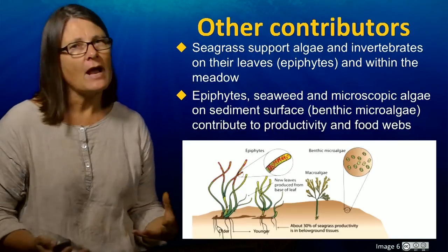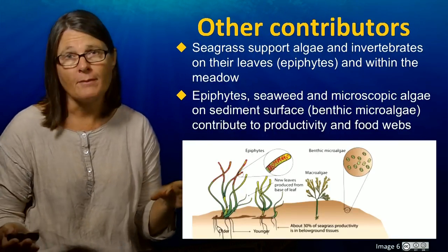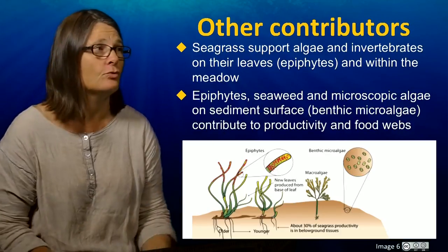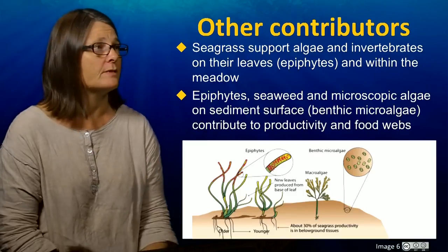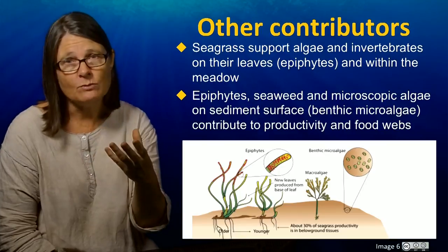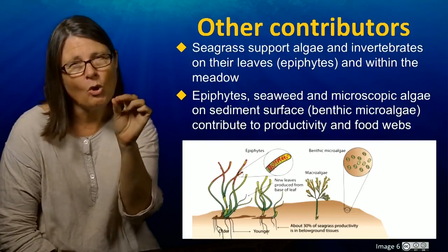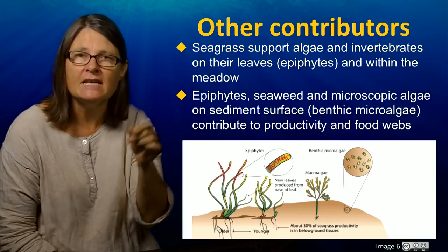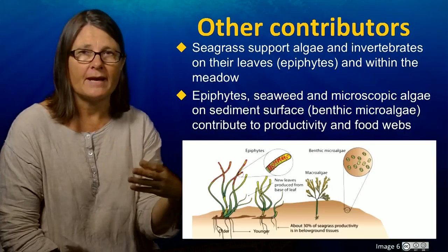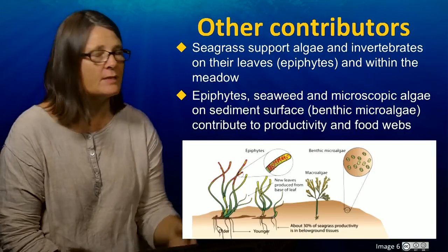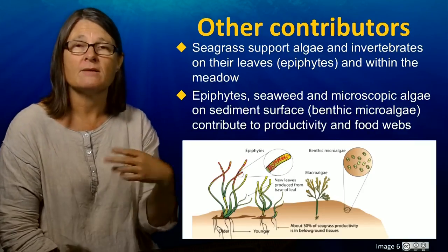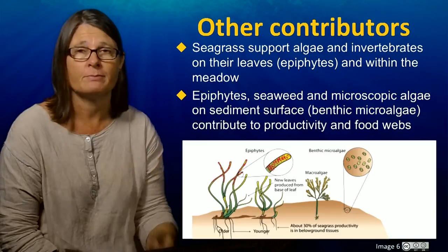Seagrasses are not the only contributors to primary production or to the food web - there are other contributors. These include macroalgae, or seaweeds, but also very small algal species that inhabit the leaves of the seagrasses. There are also microscopic algae that live on the sediment surface. These species can be highly productive and have important roles in supporting some of the animal species that live in and use seagrass beds.